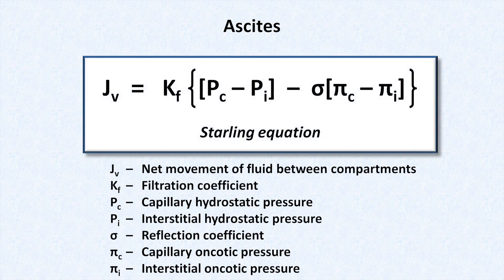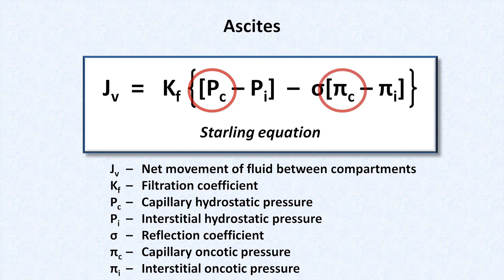To understand why cirrhosis causes ascites, we need to look at something called the Starling equation. The Starling equation predicts how quickly and in which direction fluid moves between two compartments based upon the hydrostatic and oncotic pressures of each, as well as the permeability of the membrane separating them. In cirrhosis, the combination of high portal vein pressure and low serum albumin results in a net movement of fluid from the portal venous system into the interstitial space, which eventually leads into the peritoneal space.